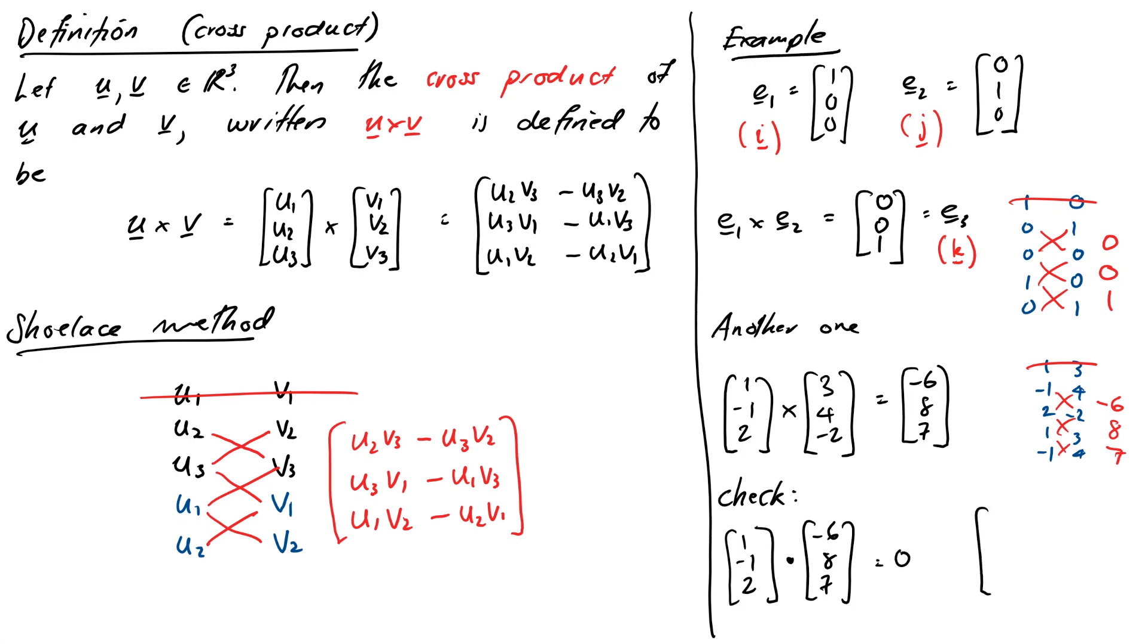And for the other one, we get (3, 4, -2) dot our cross product, (-6, 8, 7). And we get -18 plus 4 times 8 is 32, gives us positive 14, and then minus 14, and we get 0 again. So sweet, it all works out.